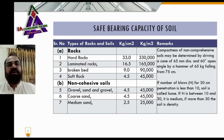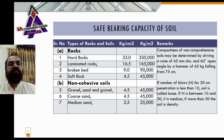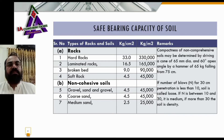Non-cohesive soils. Number five: gravel sand and gravel, bearing capacity of 4.5 kg per centimeter square and 45,000 kg per meter square. Number six: coarse sand, bearing capacity of 4.5 kg per centimeter square and 45,000 kg per meter square. Number seven: medium sand, bearing capacity of 2.5 kg per centimeter square and 25,000 kg per meter square.